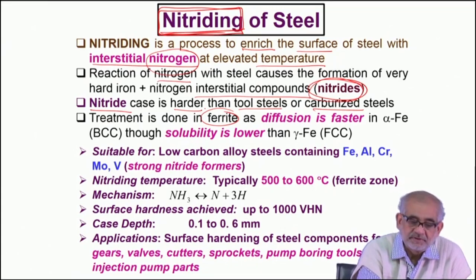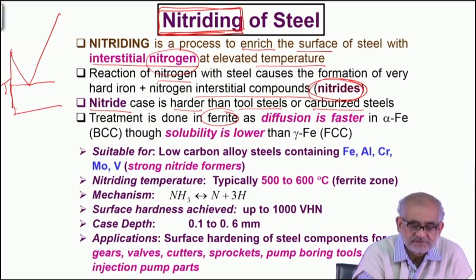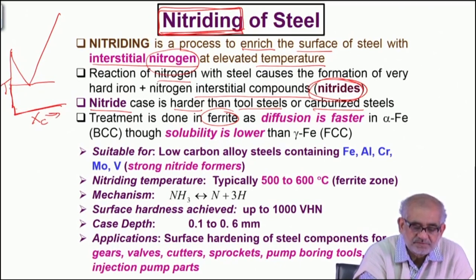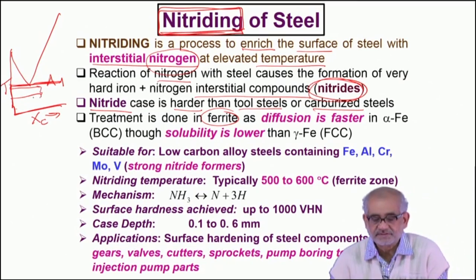This treatment is typically done in the ferritic range — that means below the eutectoid temperature. In terms of the iron-iron-carbon diagram, we are talking about a temperature range which is below A1, typically around 480–490 to about 550°C.